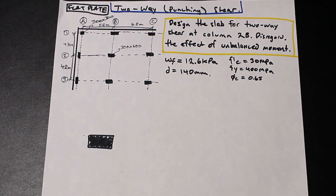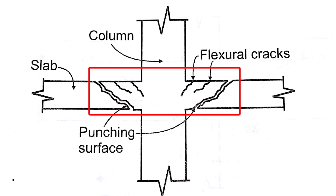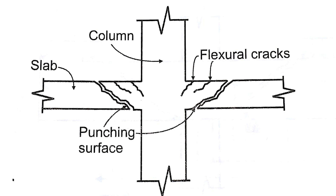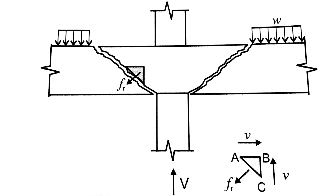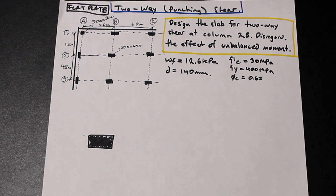So what is two-way shear? Two-way shear, otherwise known as punching shear — if you take a look at the screen, you'll see this graphic. Two-way shear happens when this critical area around the column punches through the slab and separates from it, forming diagonal flexural cracks. Essentially, two-way shear results in failure along the surface of a truncated pyramid — kind of like a cone around the column. This typically takes place when there are excessive gravity loads transmitted from the slab into the supporting columns.